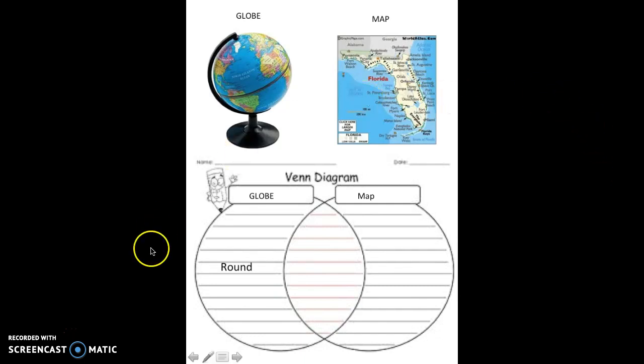We did say that maps were flat, so the flat is going to go on this side of my Venn diagram.